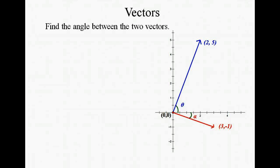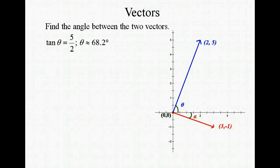We already know how to find the angle between the x-axis and the vector. So let's go ahead and use our tangent function to find the angle of theta. The tan of theta is equal to the opposite over the adjacent, so that's going to be 5 over 2. Using our arctan or inverse tan function on our calculator, we get angle theta is about 68.2 degrees.